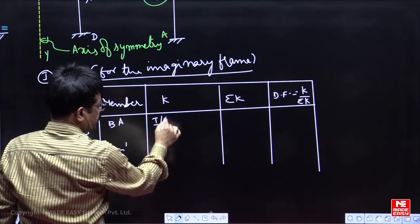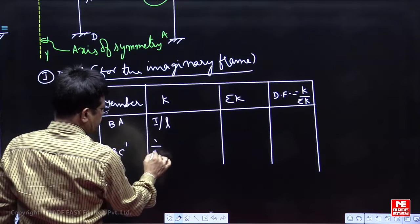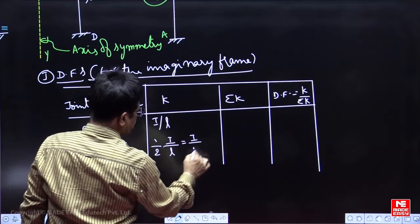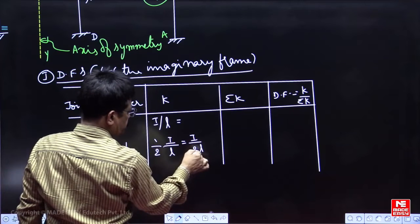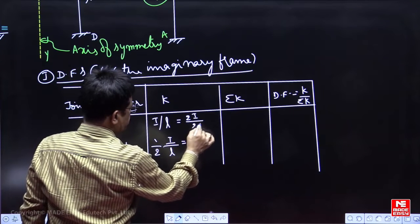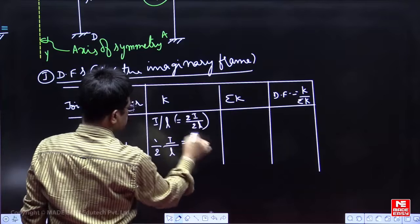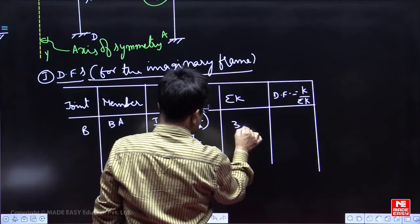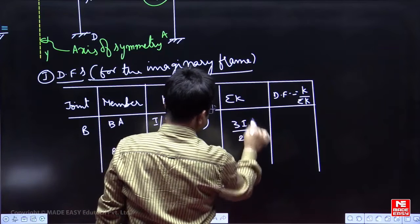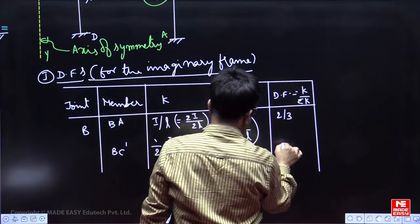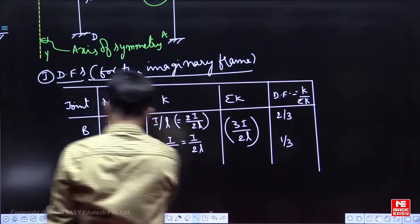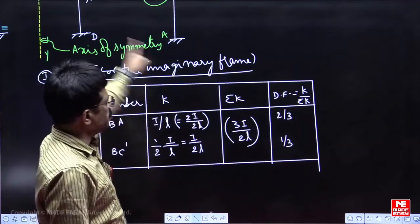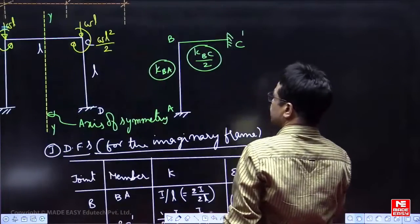Joint B, one is BA, another is BC dash. BA is same value I by L, BC dash half of the original stiffness, you will get I by 2L. To keep numericals equal, I can write this as 2I by 2L. 2 plus 1, you will get 3I by 2L. This distribution factor is 2 by 3, this distribution factor is 1 by 3. Your applied moment you distribute in this ratio.